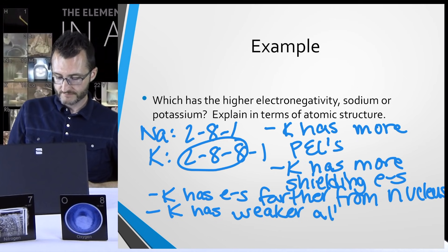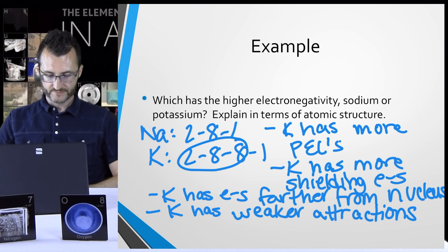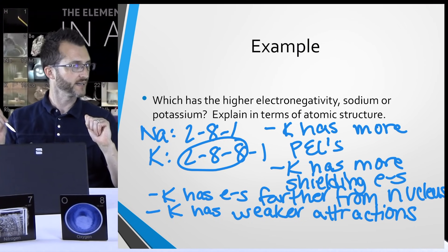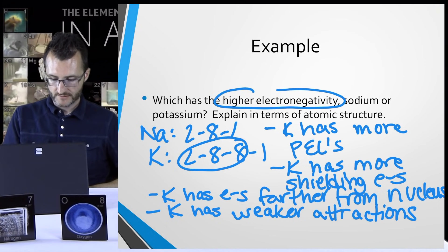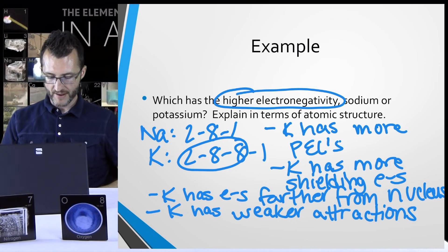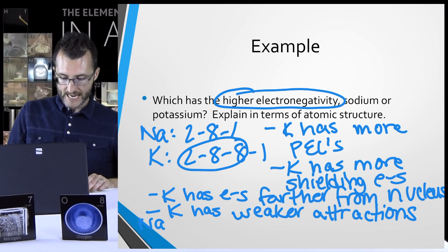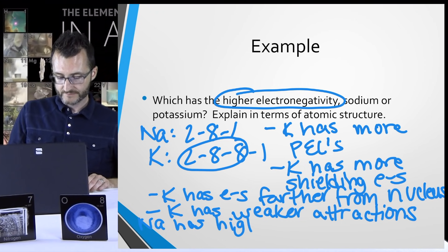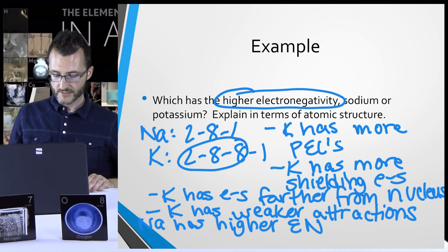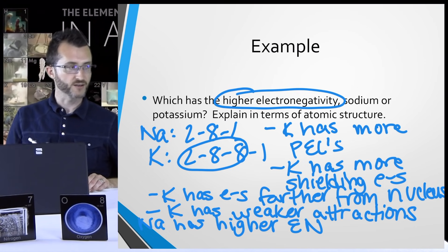We've done a lot of work but haven't answered the question yet. Electronegativity has to do with the attractions between the nucleus and electrons. Even though K came up throughout our discussion, K has weaker attractions, so it's actually Na that has the higher electronegativity. Na has fewer energy levels, fewer shielding electrons, electrons closer to the nucleus, and stronger attractions — giving it a higher electronegativity.